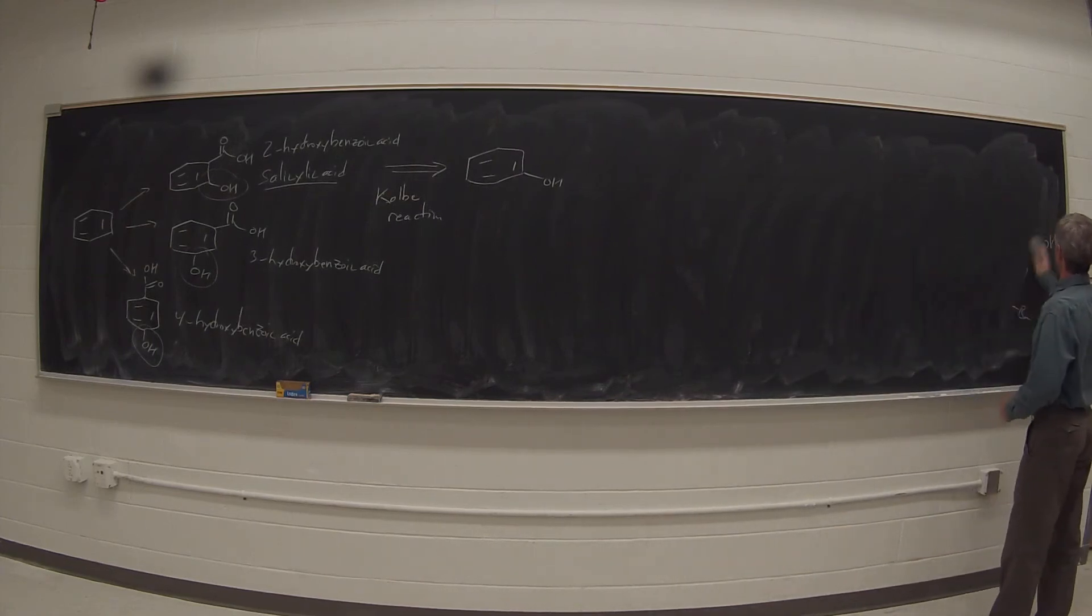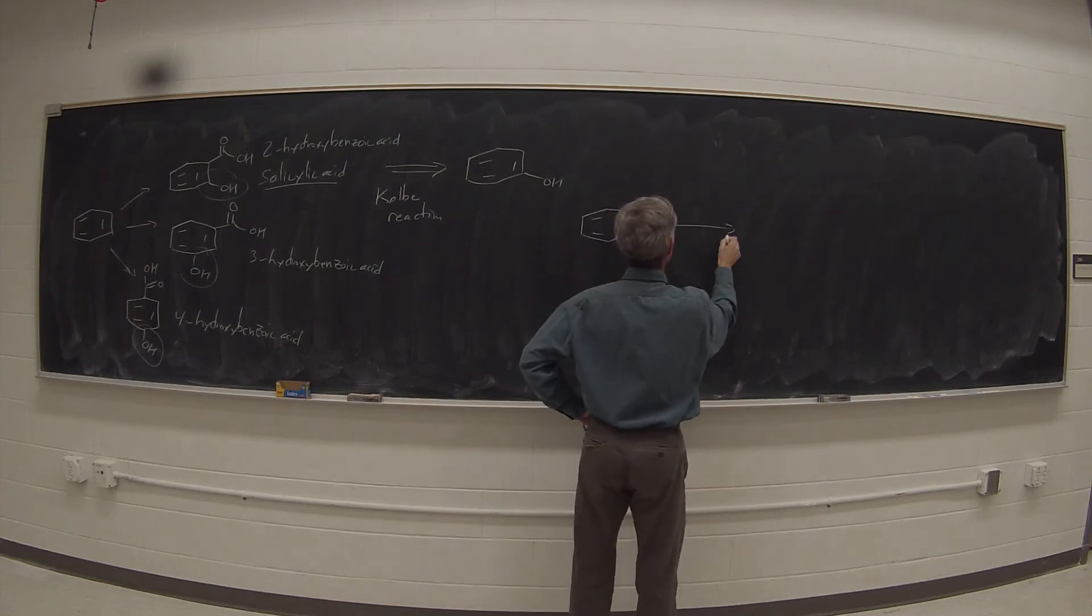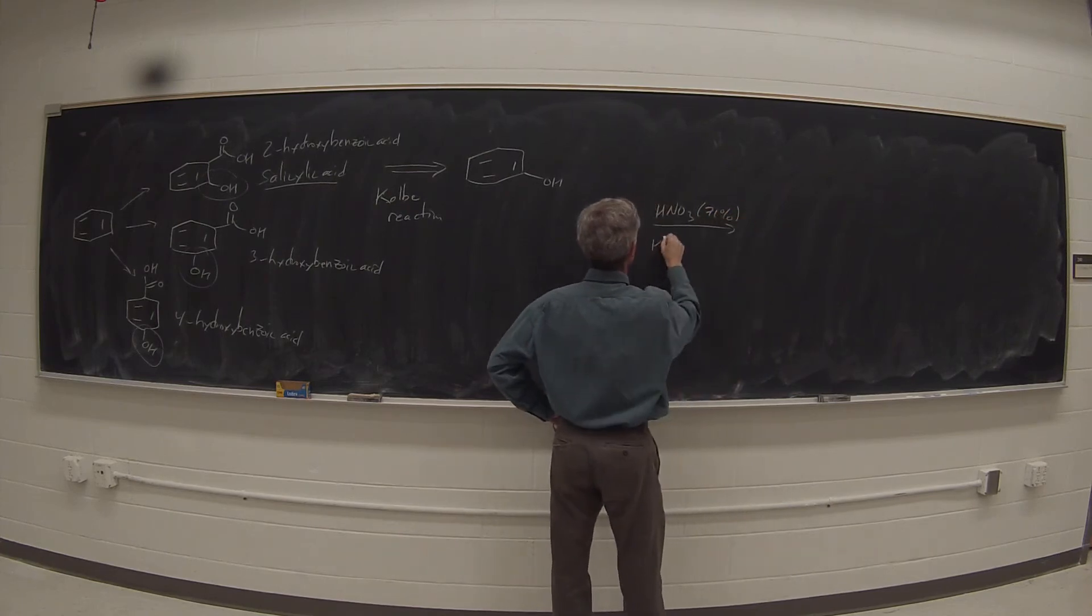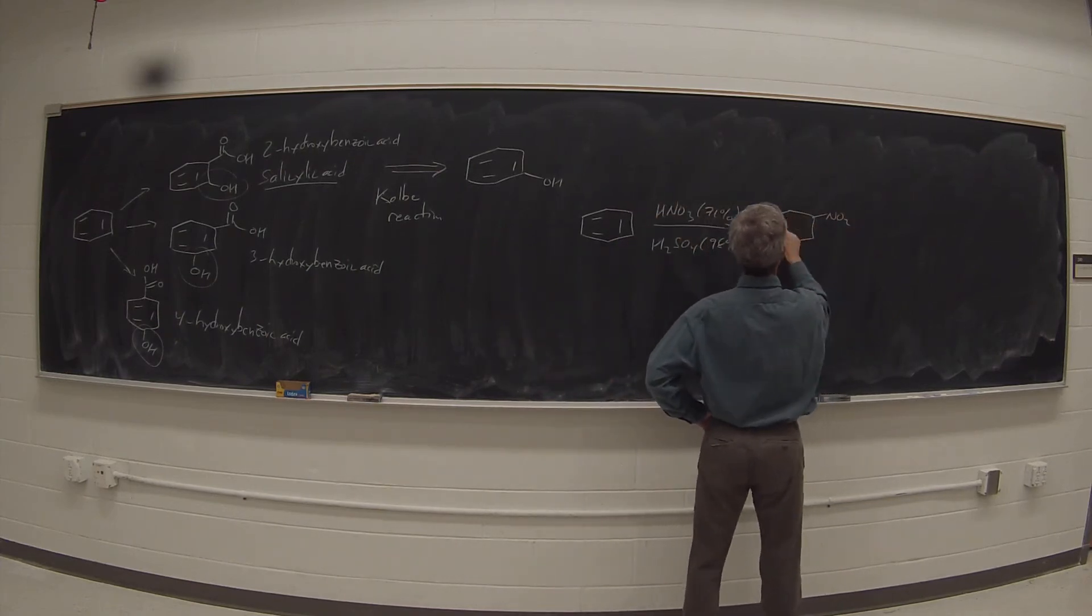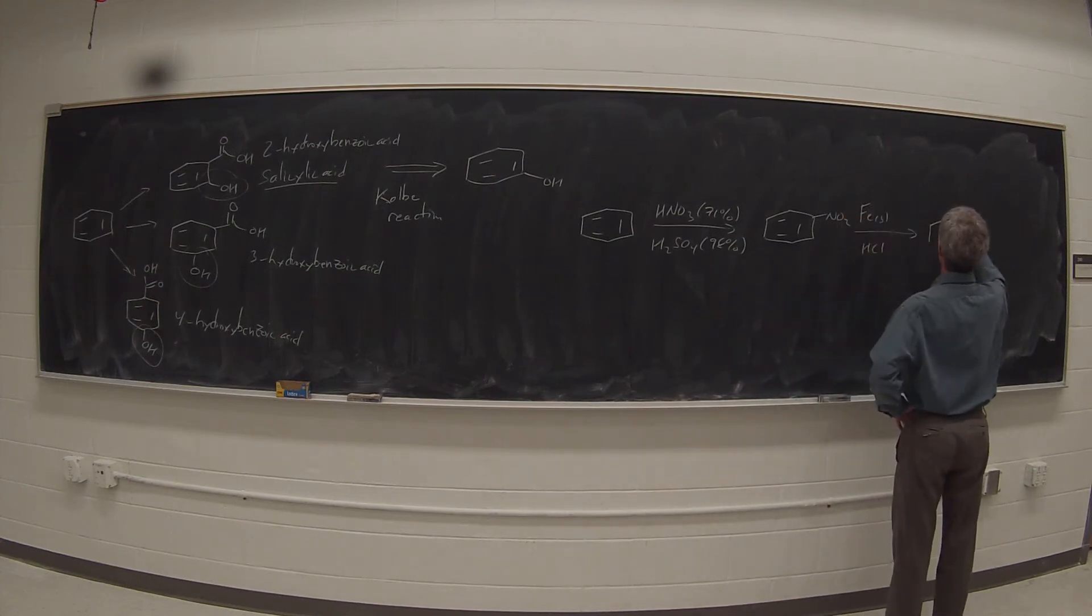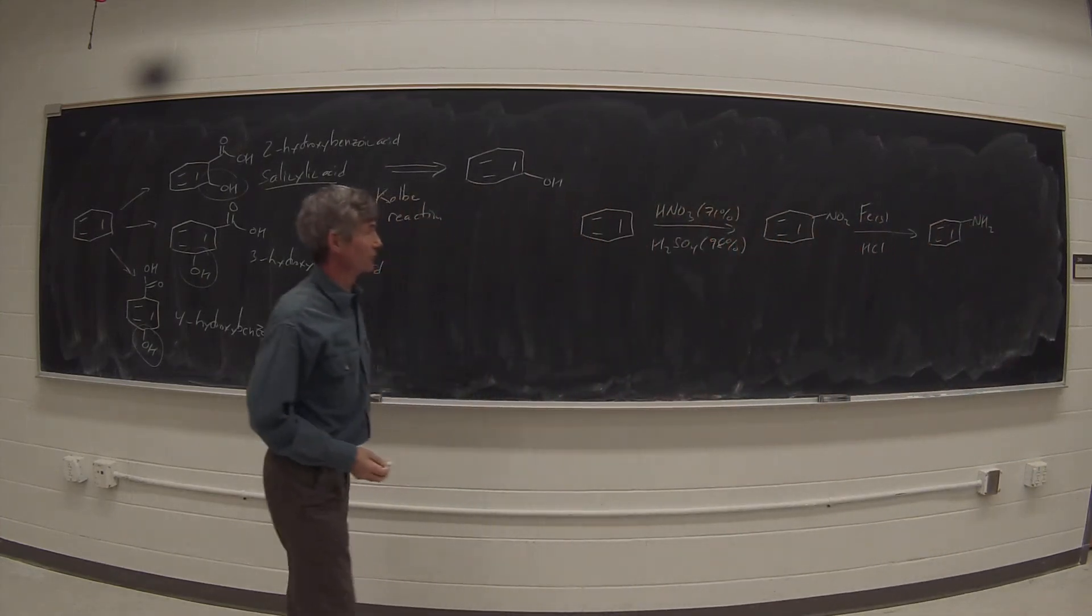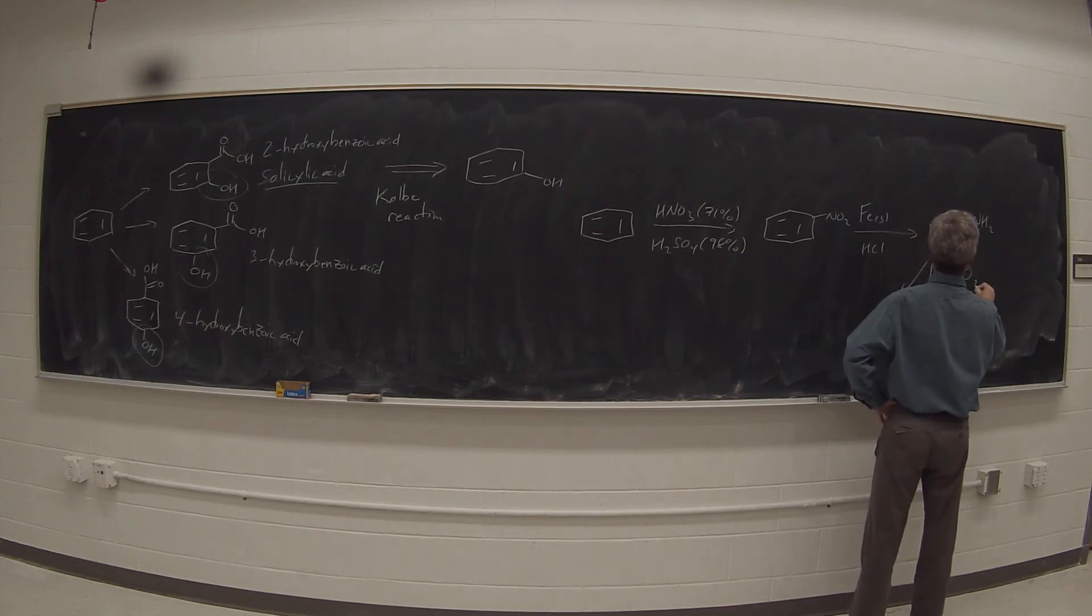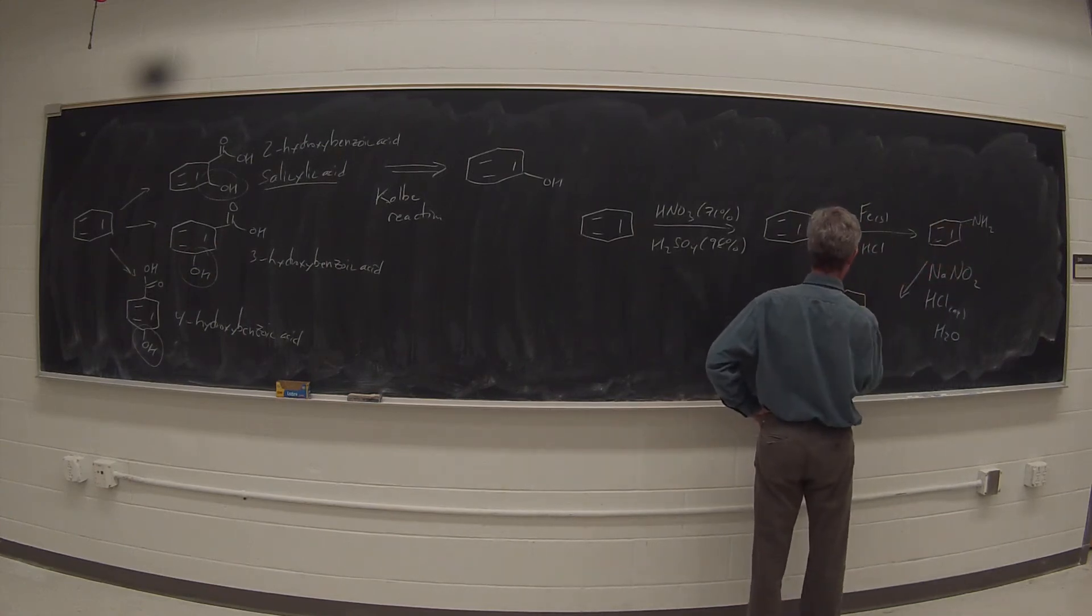But we already know that we can make that phenol by starting with benzene and reacting it with HNO3 71%, H2SO4 98%, a mixture of concentrated acids. That will make nitrobenzene, and iron and HCl will reduce that to generate NH2. Iron will be oxidized to iron(III) in the process of serving as a reducing agent. And then we can react this with sodium or potassium nitrite, NaNO2, aqueous HCl, in the presence of water to generate the phenol.